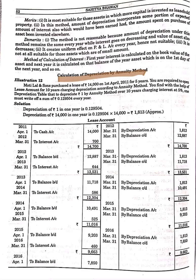The annuity method is a little bit like the straight line method because the amount of depreciation will be fixed. But along with depreciation, we also need to write off interest in it.